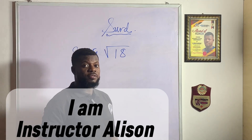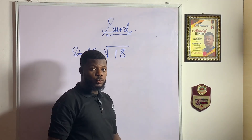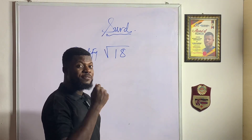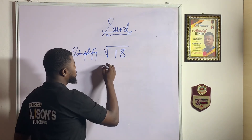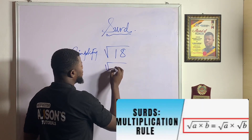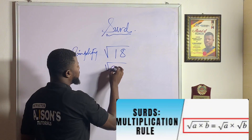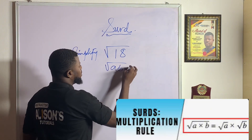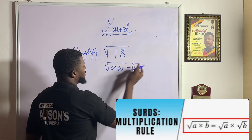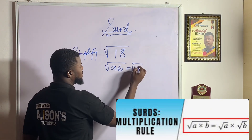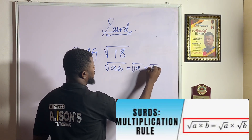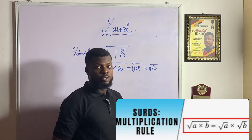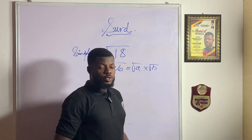The first thing you must do — first thing first — is to put the rule that the square root of a times b is the same thing as splitting this into the square root of a times the square root of b. That is the first thing you must do.